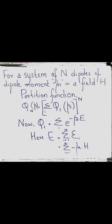To apply canonical ensemble theory to study the statistics of paramagnetism, we consider a system of N dipoles having dipole moment mu placed in a magnetic field H. We calculate the partition function Q_N(beta) of the system. For the system of N dipoles, we find out the single-dipole partition function Q_1(beta) and raise it to the power N to get Q_N(beta), just as we have done in the case of a harmonic oscillator.